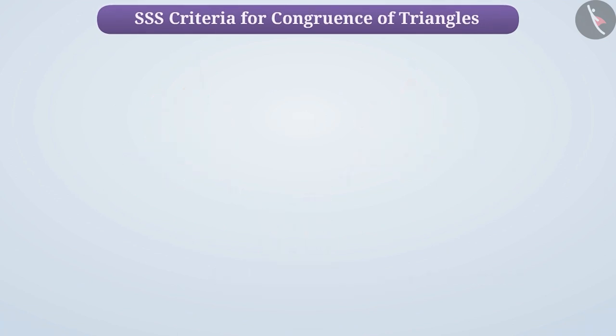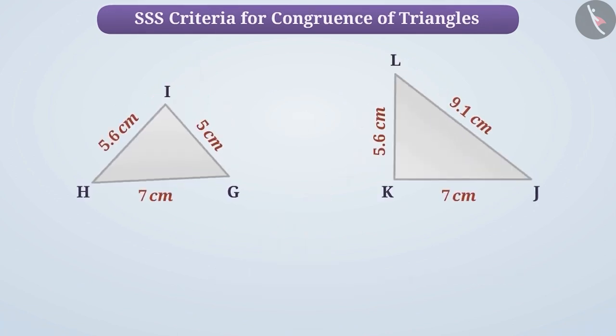Now, if we talk about triangle GHI and triangle JKL, then here GH equals JK and HI equals KL. But the third corresponding side GI and JL are not equal.